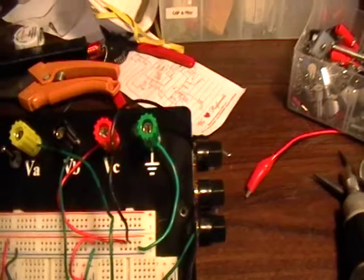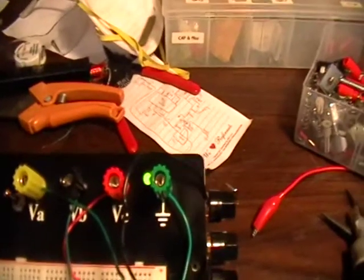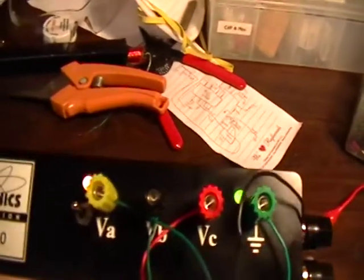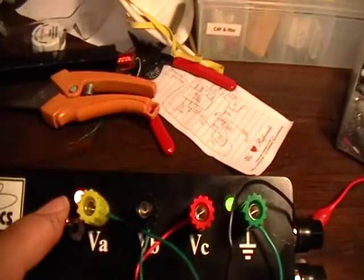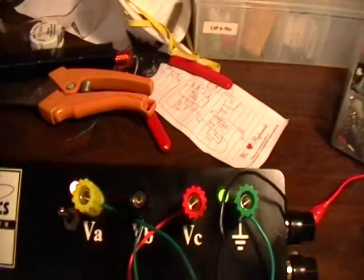So when I turn the whole thing on, I have a light for power and I have a light for the amplifier. And the amplifier can be turned on and off by the toggle switch.